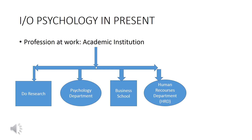Friends, let us understand what industrial and organizational psychologists do in various fields. Firstly, they do research in schools, colleges, and at university level. Secondly, they work in psychology departments as a trainer, facilitator, assessor, coach, or consultant. In business school, they do teaching, research, and are concerned with admissions. In the human resources department, they are consultants to the organization and help solve organizational problems.